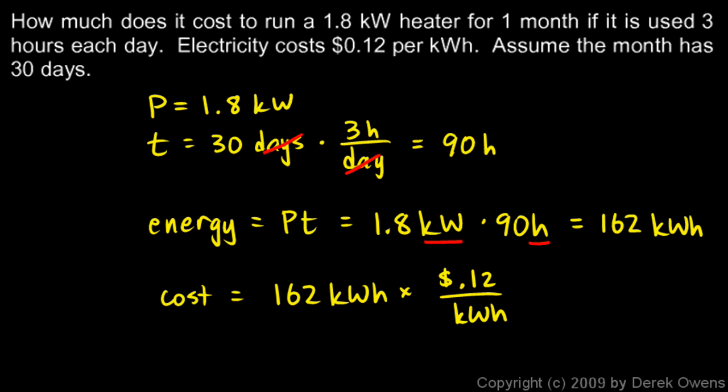And set up this way, you can see the kilowatt hours cancel, and we're left with dollars for our unit. And 162 times .12 comes out to 19.44. So that's $19.44 to run that heater.